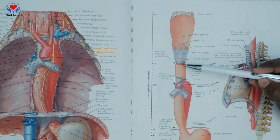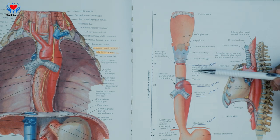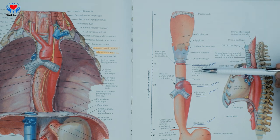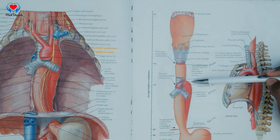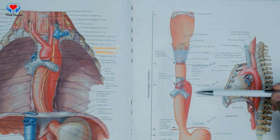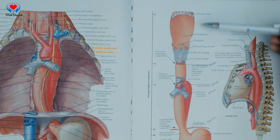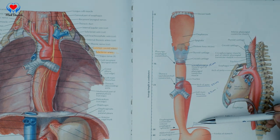Inside the lumen of the esophagus, the diameter is not uniform everywhere — it has some constrictions. The distance of these constrictions from the incisor teeth is very important to remember, because knowing normal anatomy allows us to diagnose abnormalities. There are four main constrictions: the first is at the commencement of the esophagus at the cricopharyngeal muscle, 15 cm from the incisor teeth; the second is 22 cm, where it is crossed by the arch of the aorta; the third is 27 cm, where it is crossed by the left main bronchus; and the fourth is 38 cm, where it pierces the diaphragm.